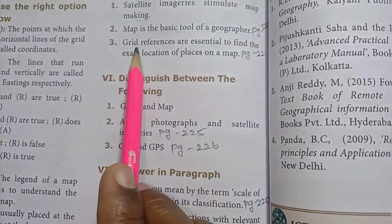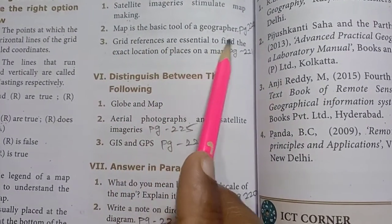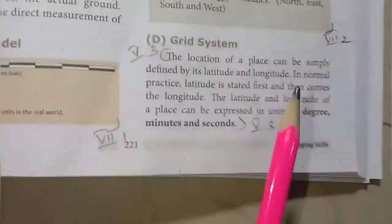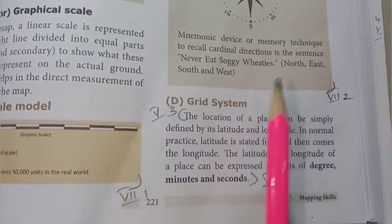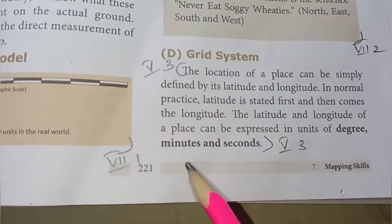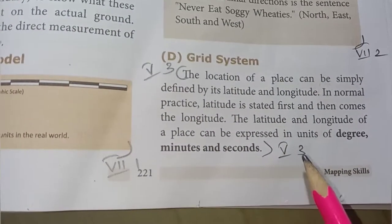Then third one. Grid references are essential to find the exact location of places on your map. Page number 221. Grid system, right side, in the box. And the sixth lines, the location of a place, minutes and seconds. Fifth Roman numeral, third one answer.